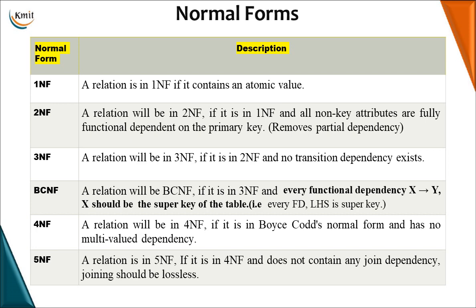1NF states that the relation should not contain any multiple values in a column — every cell should have atomic values. This is the basic rule to have a table in 1NF. 2NF says the relation should already be in 1NF, meaning atomic values in each cell, and all non-key attributes should be fully functionally dependent on the primary key. That means there should not be any partial dependency.